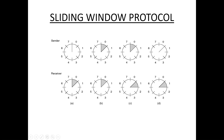The first type is the one-bit sliding window protocol. One-bit sliding window protocol is used for delivery of data frames.